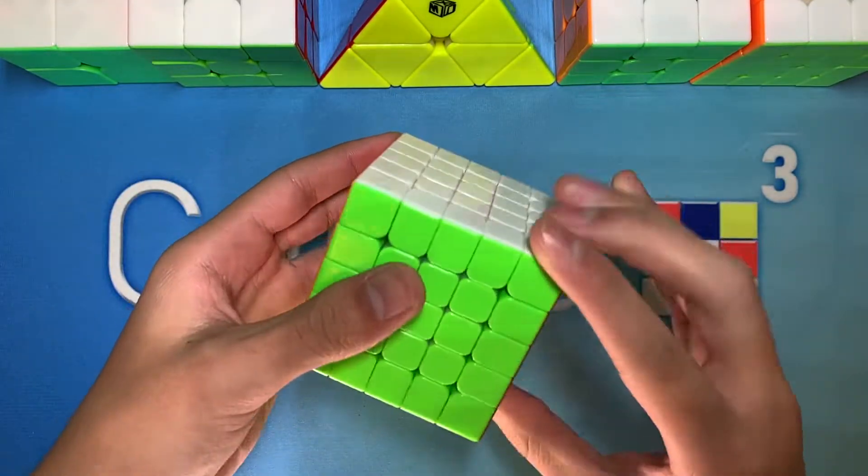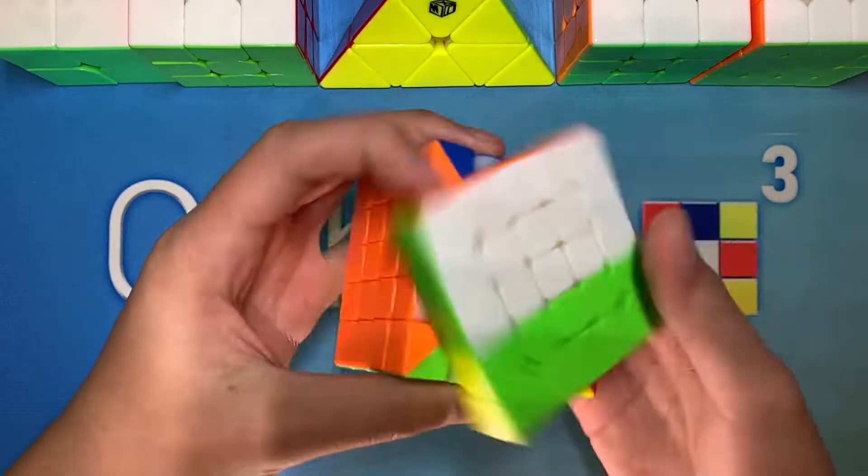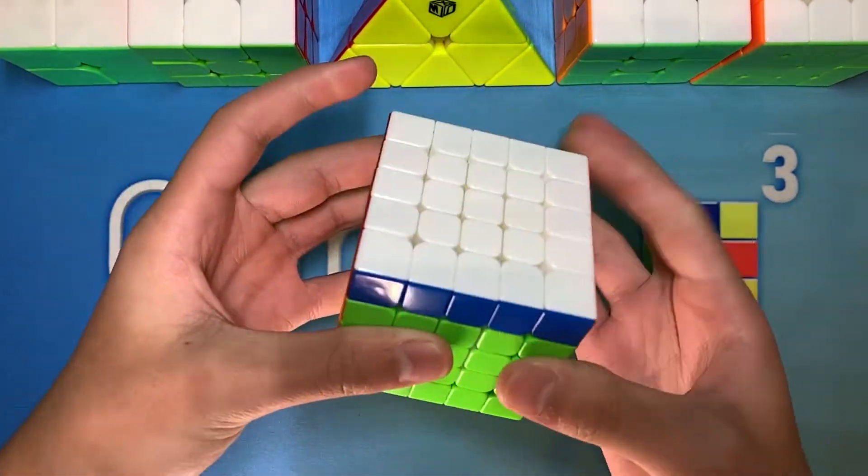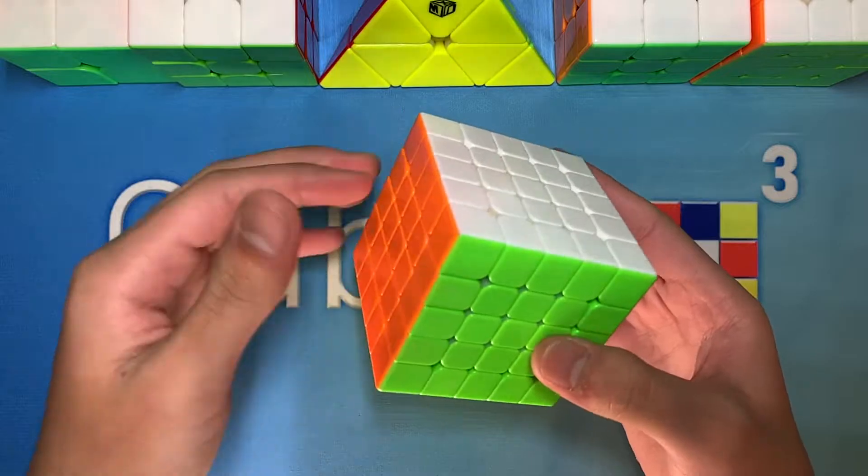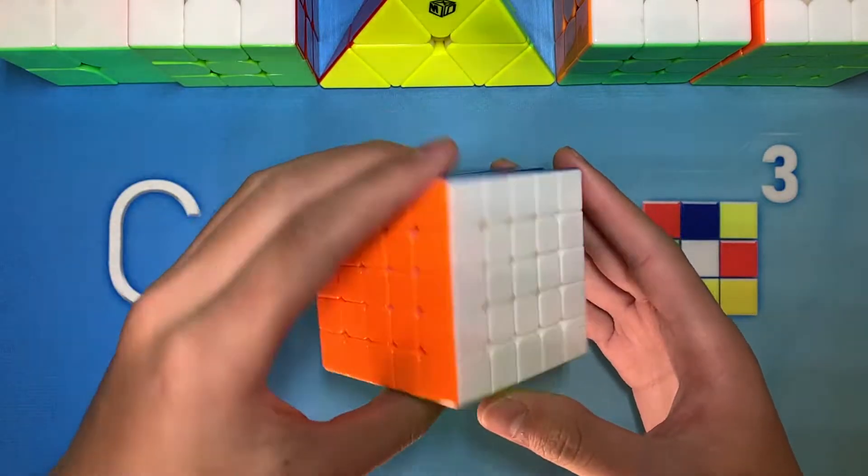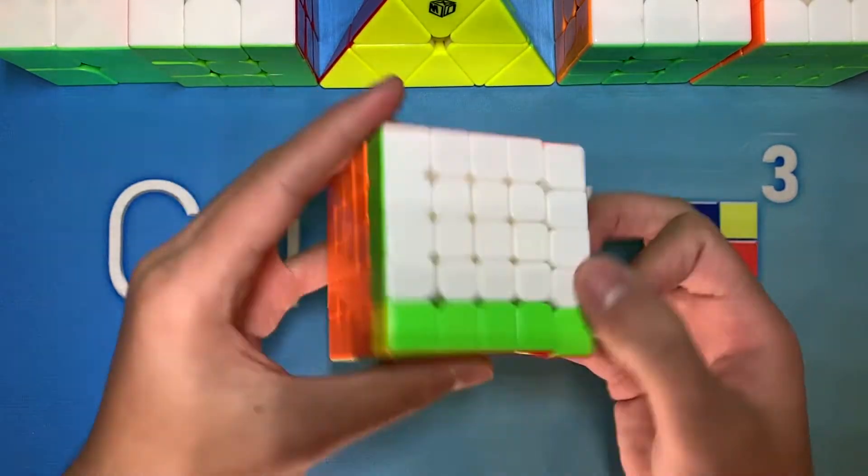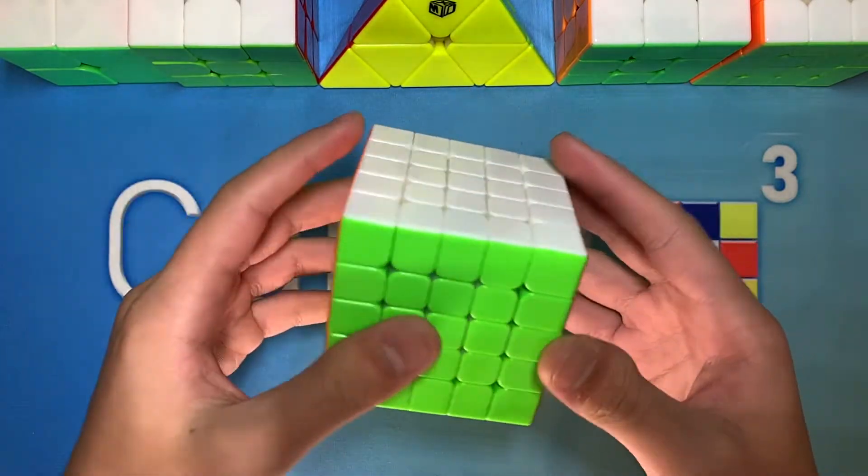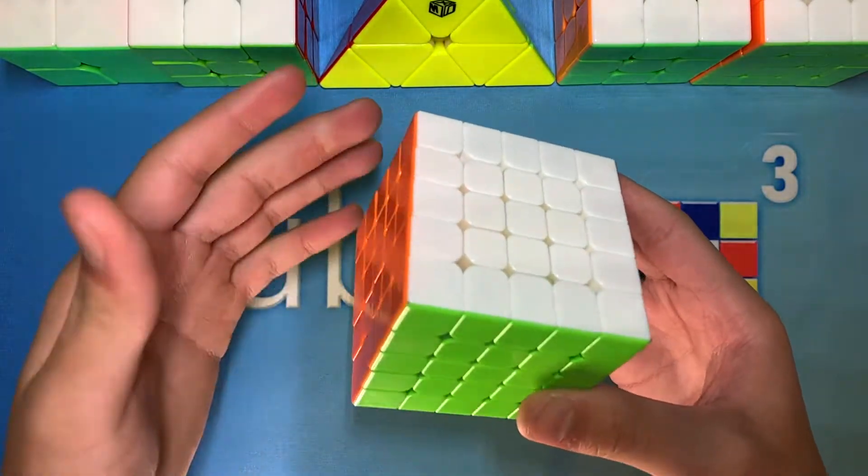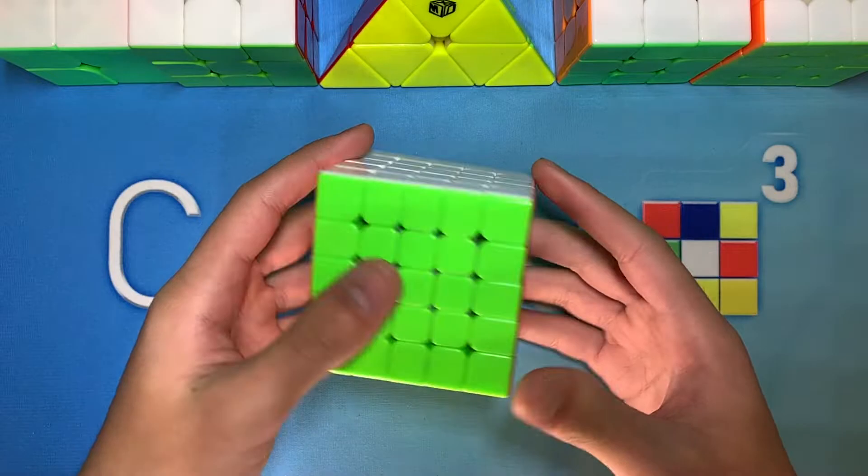For 5x5, I'll be using a Valk 5M, which is a cube that I really like. I actually haven't been able to use this cube in competition yet, despite having it for a few months. Therefore, my goal for 5x5 will probably be to get a sub 1 minute and 20 second average, which would be PR.